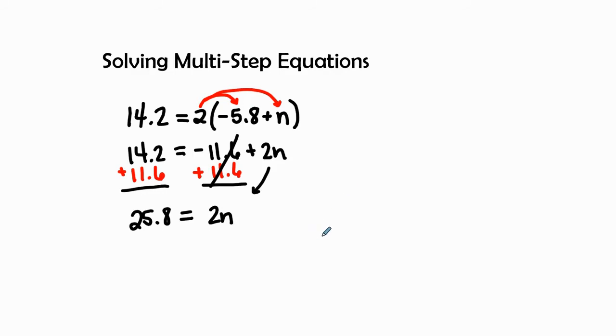Now I see that the 2 is attached to the n by multiplication, so I'm going to divide both sides by 2 to get this variable by itself.